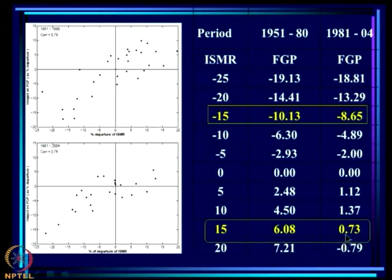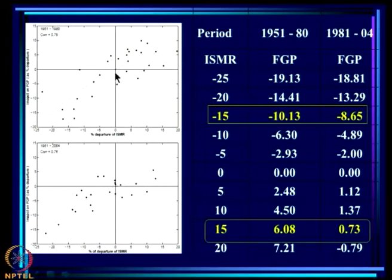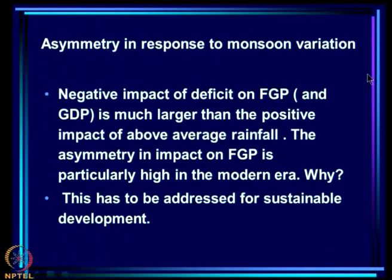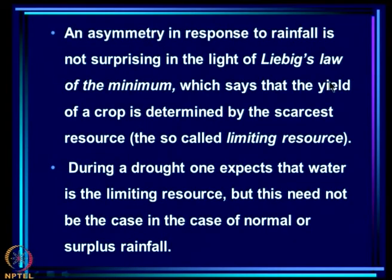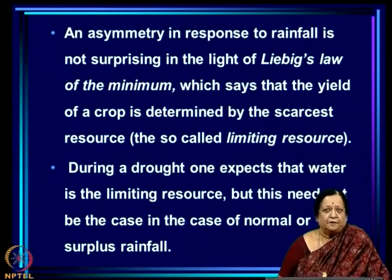The asymmetry in impact on FGP increased sharply in the last three decades. In the earlier era (1951–1980), the magnitudes of impacts of a drought and a surplus on FGP were comparable — a 15 percent deficit had minus 10 percent impact and a 15 percent surplus had plus 6 percent impact. But after 1980, the impact of surpluses has become almost negligible — less than 1 percent — while the impact of deficits remains around minus 8.65 percent. The curve is becoming more non-linear in the modern era.